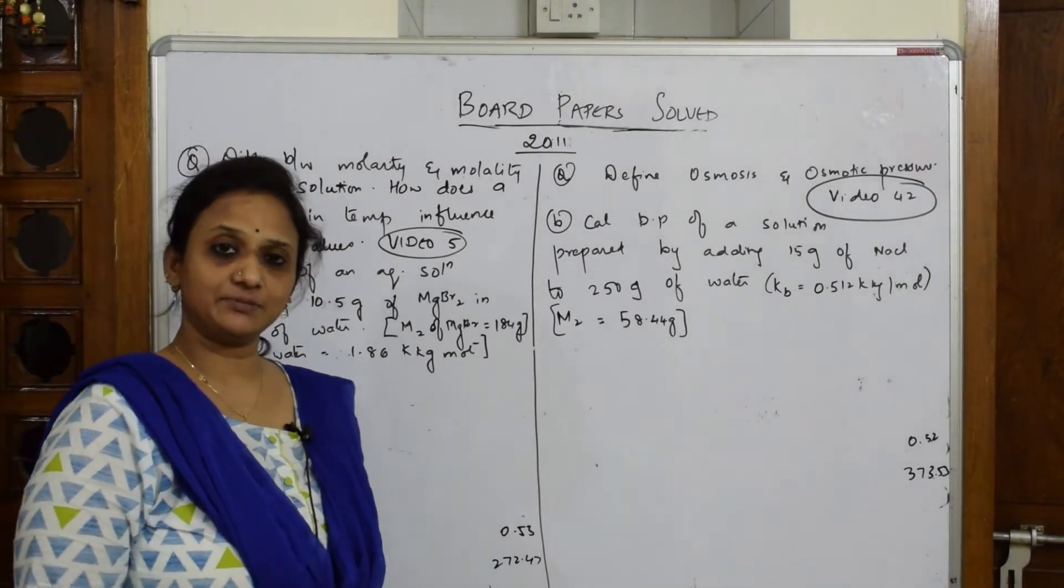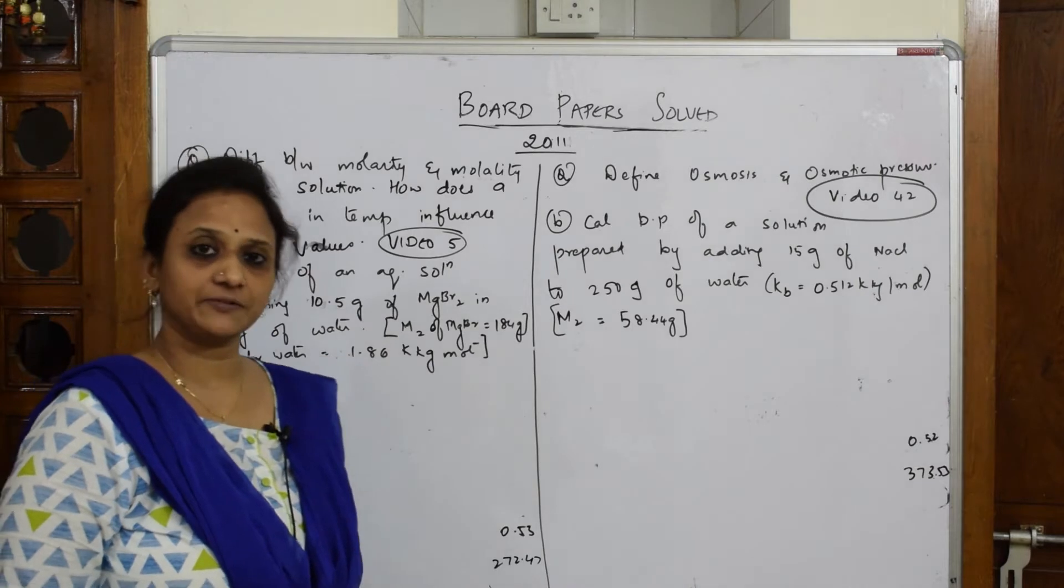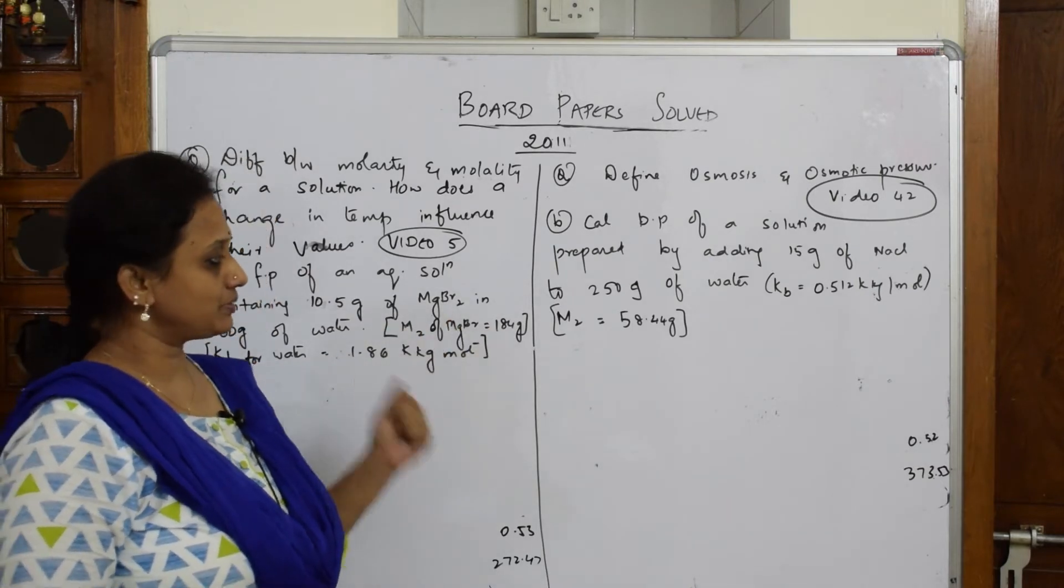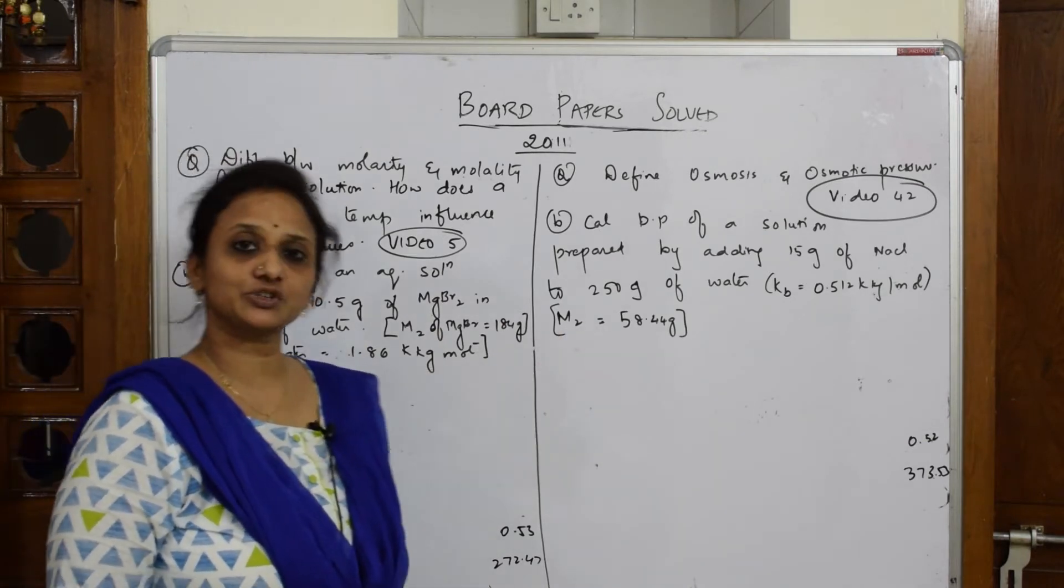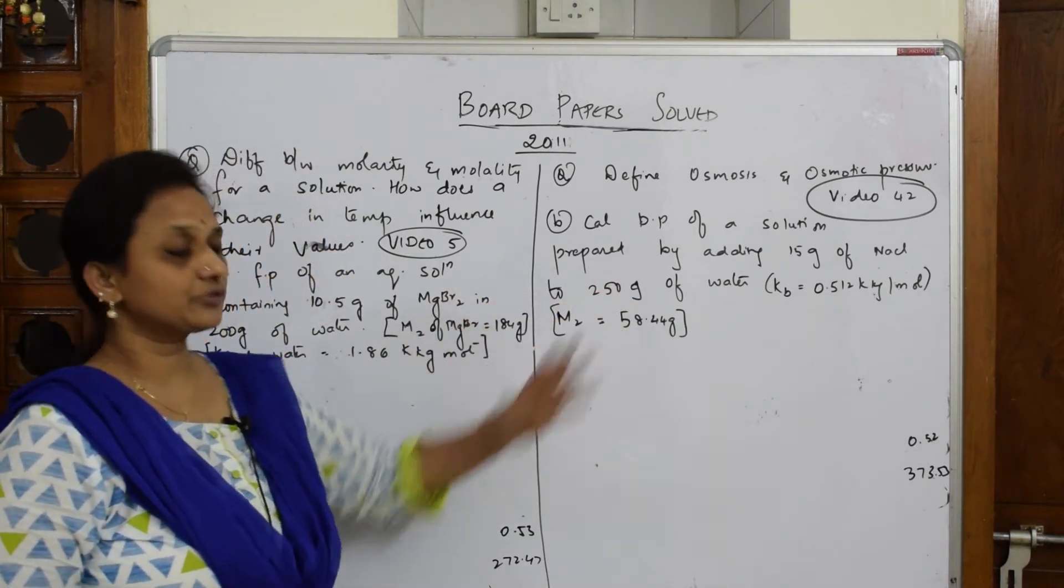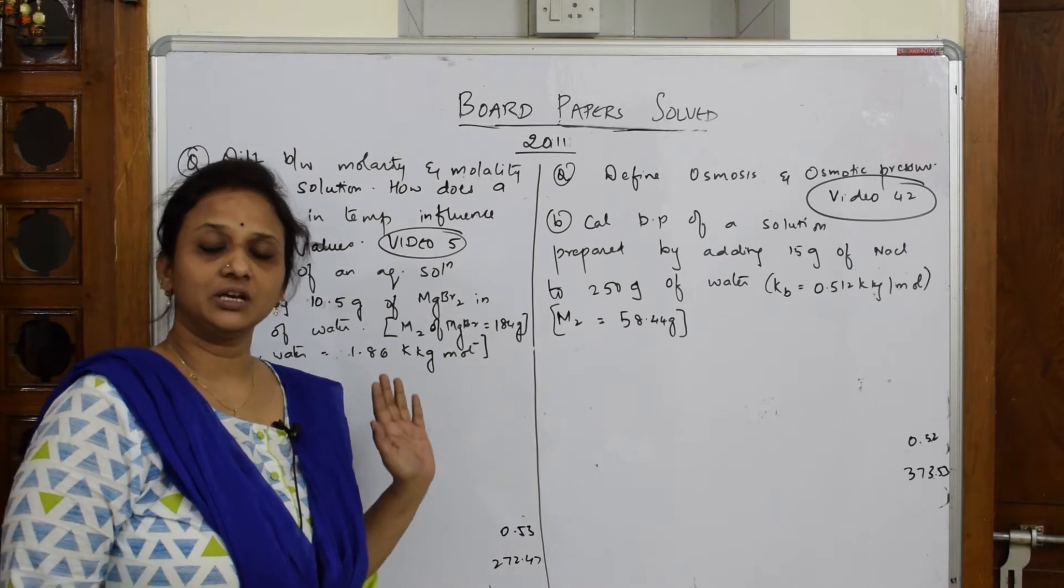Welcome back. Let us solve the 2011 paper. Both option questions are given, so I've clubbed them together because one question asks you to find TB and the other asks you to find TF.